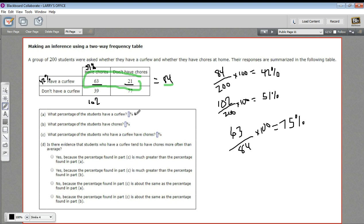So let's fill in our answers here. We got 42% for this one. We got 51% for this one. We got 75% for this one. And let's look at D. D says, is there evidence that students who have a curfew tend to have chores more often than average? And I say yes, because the percentage of students who have a curfew have chores at a rate of 75%. And that's higher than what we found in the population as a whole. The have chores was only 51% in the population as a whole. So let's say we can find the right answer here. It's definitely going to be one of the yeses. That's what I'm saying.